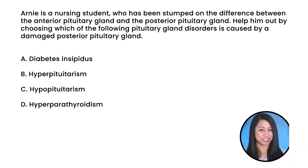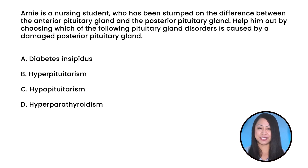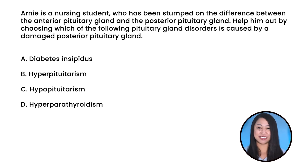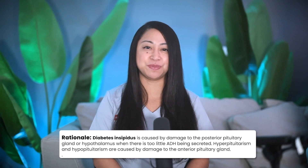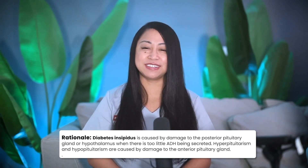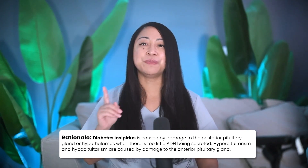Quick NCLEX pop quiz! Arnie is a nursing student who has been stumped on the difference between the anterior and posterior pituitary gland. Help him out by choosing which of the following pituitary gland disorders is caused by a damaged posterior pituitary gland. A: Diabetes insipidus, B: Hyperpituitarism, C: Hypopituitarism, or D: Hyperparathyroidism. And the correct answer is A, Diabetes insipidus. Diabetes insipidus is caused by damage to the posterior pituitary gland or hypothalamus when there is too little ADH being secreted. Hyperpituitarism and hypopituitarism are caused by damage to the anterior pituitary gland.